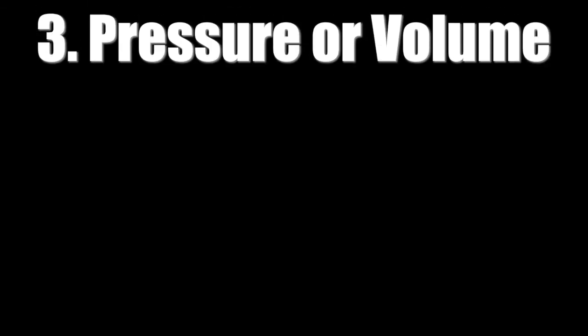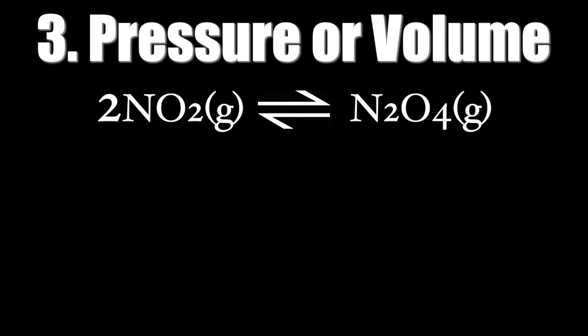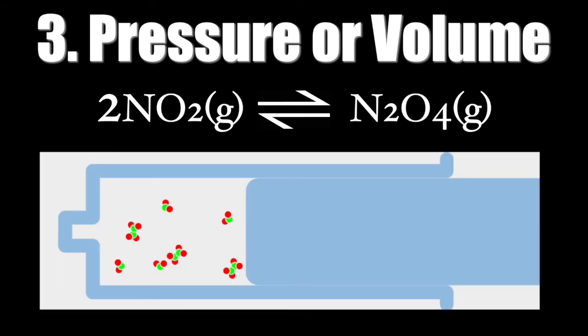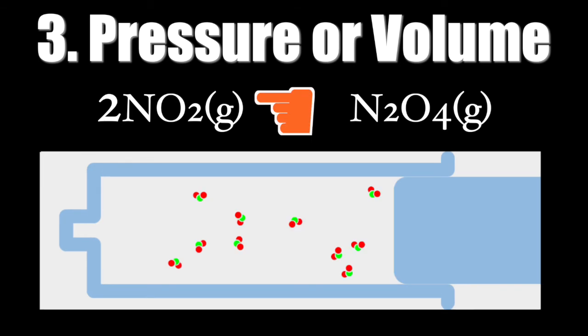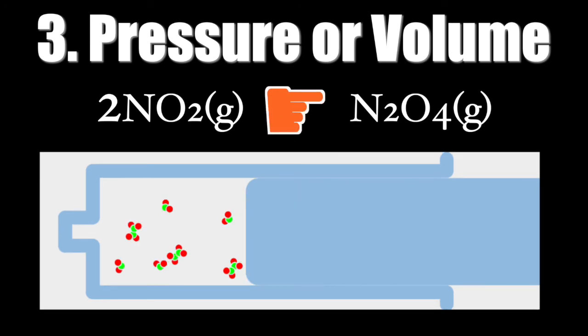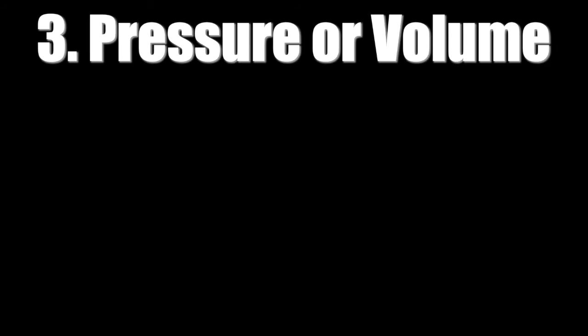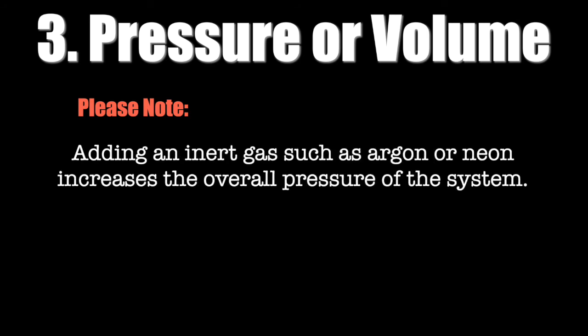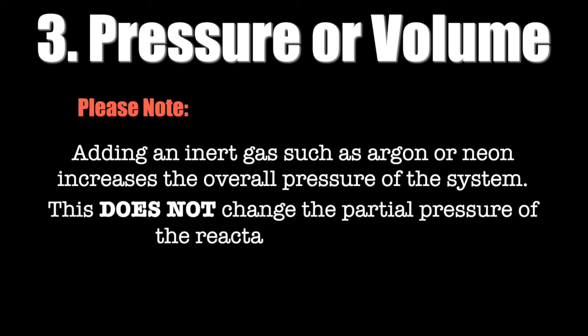Number 3. Pressure or volume. Pressure or volume can change if a chemical reaction involves a gas. In this case, changing the partial pressure or volume of a gas acts the same as changing its concentration. If the pressure increases, the reaction shifts towards the side with lower pressure or vice versa. Please note that adding an inert gas such as argon or neon increases the overall pressure of the system. This does not change the partial pressure of the reactants or products. Therefore, equilibrium does not shift.